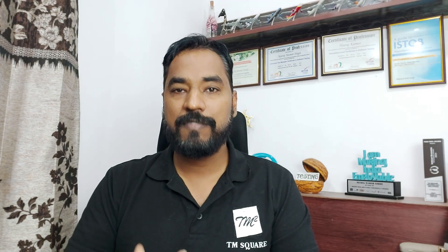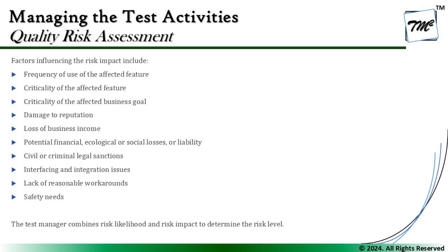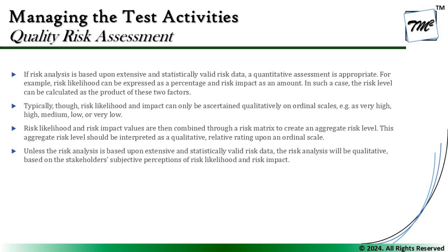We assess both factors — what is the chance of this risk happening, and if it does, what would the impact be? The higher both values are, the higher the risk level; the lower they are, the less testing effort is needed. That's where a manager combines risk likelihood and impact to determine the risk level and the proportionate amount of testing required. If risk analysis is based on extensive and statistically valid risk data, a quantitative assessment is appropriate — for example, likelihood expressed as a percentage and impact as a monetary amount, and the risk level calculated as the product of these two.